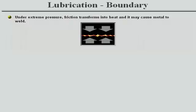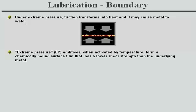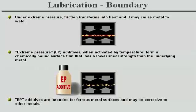When metal surfaces slide over each other under boundary conditions, there will normally be some degree of metallic contact. This is transformed into heat which gives rise to local flash temperatures. If loads are too high or speeds too low, dangerously high local temperatures will be obtained, causing the metal to melt at the asperities concerned. To avoid welding at the surfaces, metal transfer and subsequent seizure, extreme pressure or EP additives are incorporated into certain types of lubricants, such as oils for heavily loaded turbine gears. These additives are activated by local high flash temperatures and react spontaneously with the metal surfaces, forming a chemically bound surface film.